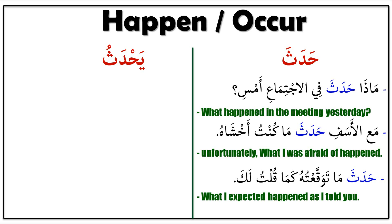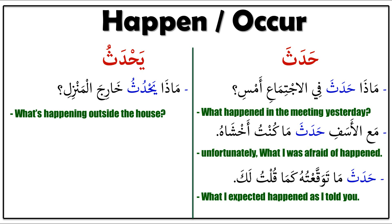Now let's see the present tense يَحْدُثُ — yahduthu. Please look: مَاذَا يَحْدُثُ خَارِجَ الْمَنْزِلِ — matha yahduthu kharij al-manzil — it means 'what's happening outside the house.' Matha yahduthu means what's happening, kharij means outside, al-manzil means the house.